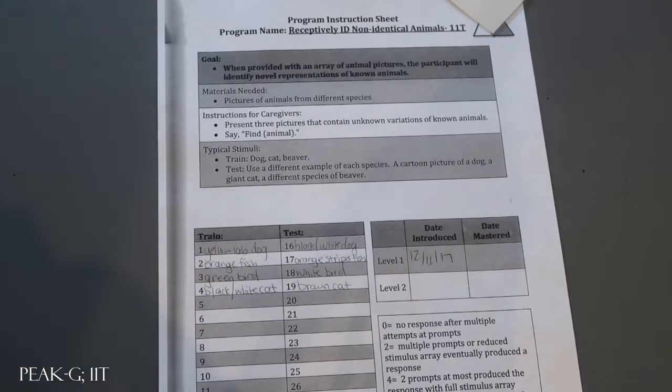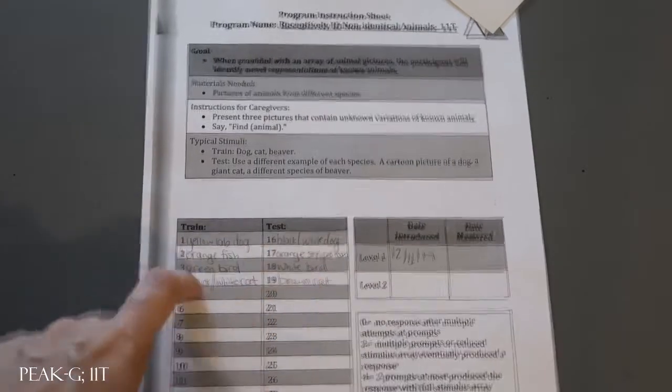But with peak generalization, you do have train and test stimuli intermixed within a block. So it's just really important to check your scoring. Make sure you're not prompting, praising, or giving any feedback on any of the test stimuli, but that you are for train and scoring accordingly.